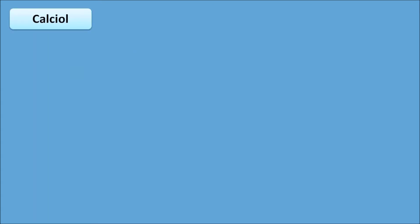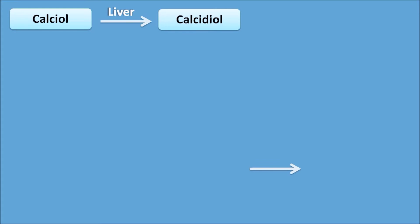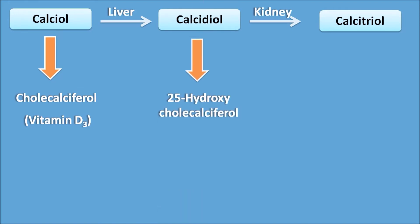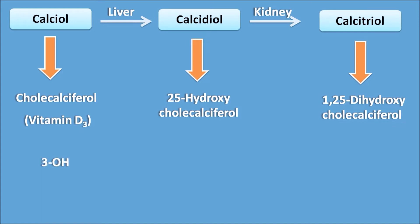There are three forms of vitamin D. The first is calciol, which can be converted into calcidiol in the liver. Calcidiol is then converted into calcitriol in the kidney. Calciol is also called cholecalciferol, which is vitamin D3. Calcidiol is 25-hydroxycholecalciferol, and calcitriol is 1,25-dihydroxycholecalciferol. Calciol has a 3-OH group, calcidiol has 3,25-OH groups, and calcitriol has 1,3,25-hydroxy groups — hence the names calciol, calcidiol, and calcitriol.